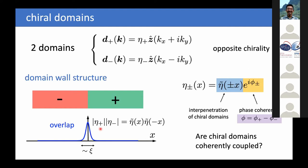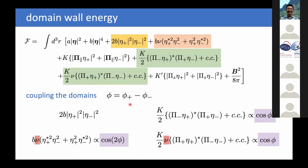If I look at the product eta-plus times eta-minus, this is only finite in the overlap region. I need to identify Ginzburg-Landau energy terms that describe just this overlap. Looking at the free energy, I have colored all terms with such an interface coupling. Some terms have no such coupling: the second-order terms, and also some gradient terms. But there are two fourth-order terms that couple — the yellow and orange ones — and two gradient terms where gradients are in-plane only, not along the C-axis.